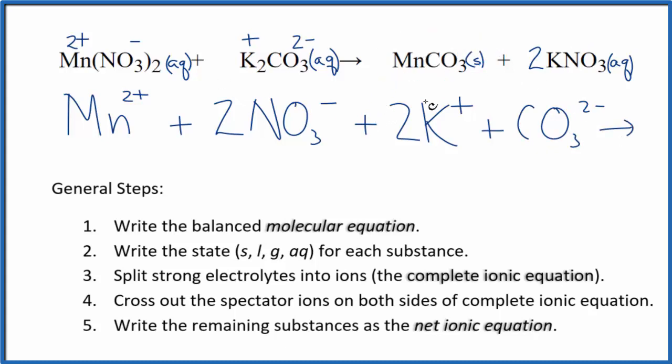For the products, we don't split solids apart in net ionic equations. So this precipitate here, this MnCO3, we keep that together. And then we have potassium - positive, the nitrate is negative. So two potassium ions, just like we have in the reactants up here, and two nitrates. So this is the complete ionic equation.